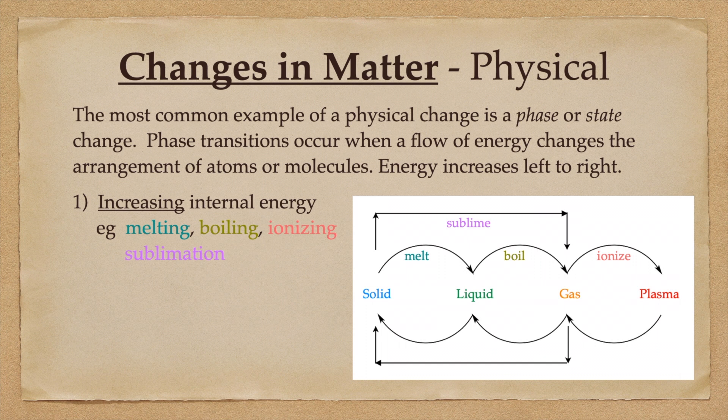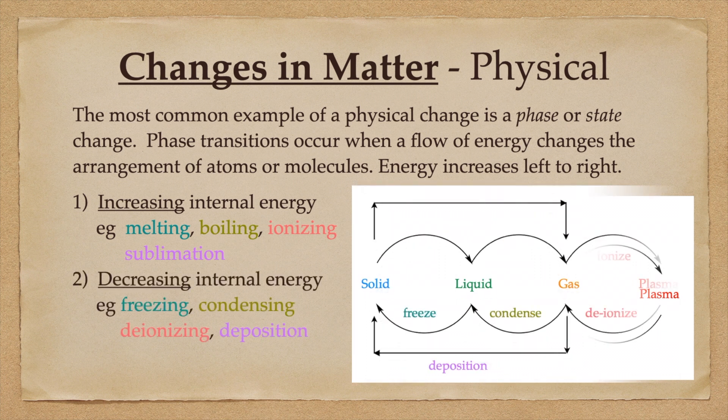Phase transitions occur when a flow of energy changes the arrangement of atoms or molecules. In the diagram below, the energy increases from left to right. The internal energy of a system will increase if it melts, boils, ionizes, or sublimates. That would be moving from left to right on the diagram.